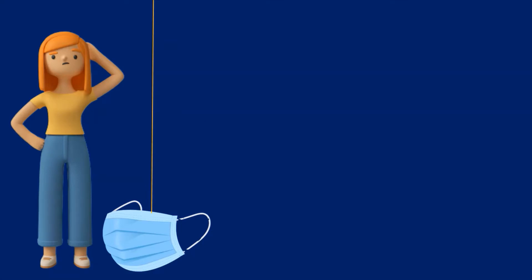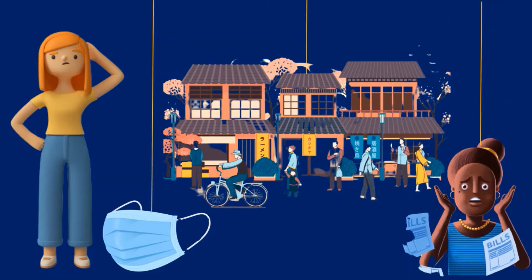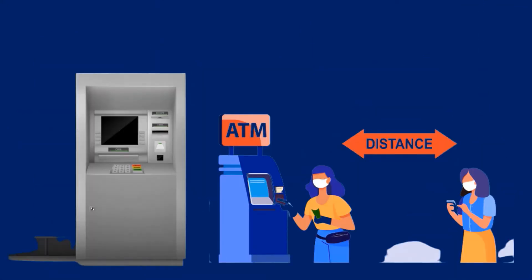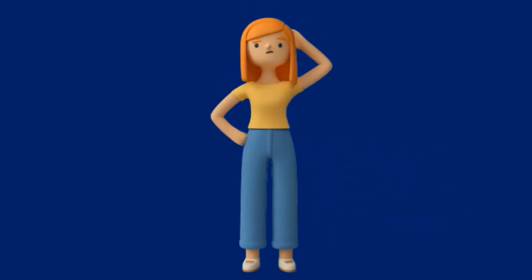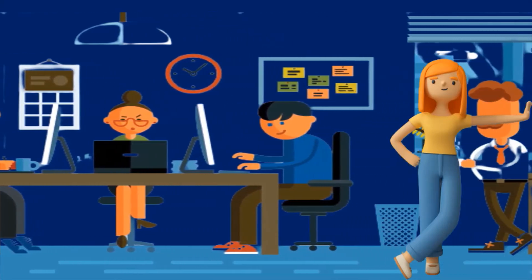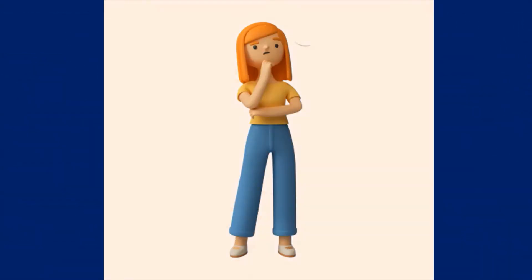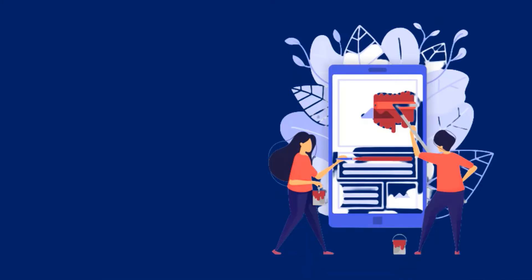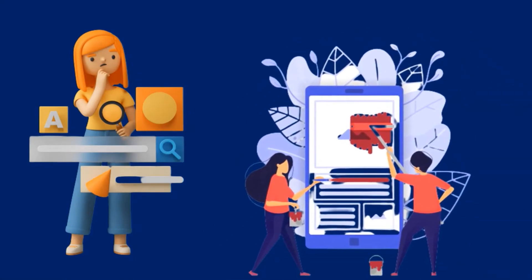Recently, Manali had a problem due to this COVID-19 situation. Unable to go near crowded people, she was unable to pay her water supply bills. She can't go to ATM machines, stand in long queues, and in-person meetings are not possible as well. She looks confused and decided to search the internet for a solution.